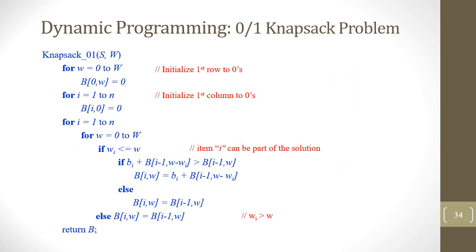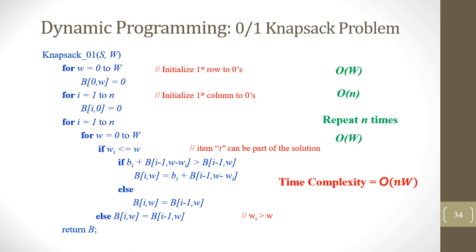What is the complexity of this algorithm? The initialization loops are O(W) and O(N). The nested loop has outer loop of N and inner loop of W, giving total complexity of O(NW). The brute force algorithm took O(2^N), so we have reduced it to O(NW).